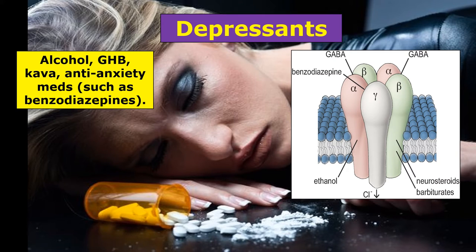Depressants are drugs that reduce arousal or stimulation of the body. They do this primarily by acting on a receptor in the brain for the chemical GABA — a relaxation chemical that lowers your blood pressure and slows your heartbeat. Receptors for GABA are stimulated by alcohol and anti-anxiety medicines like benzodiazepines. This is why you should not mix anti-anxiety meds with alcohol — they both stimulate GABA receptors and you could overstimulate them, causing your heartbeat and blood pressure to drop fatally. This is a common overdose problem.